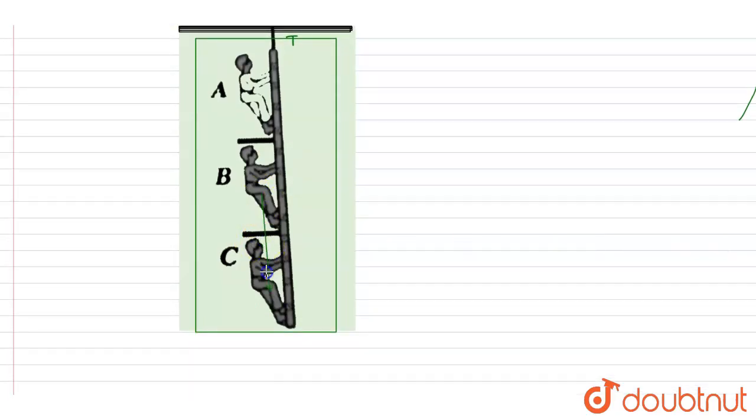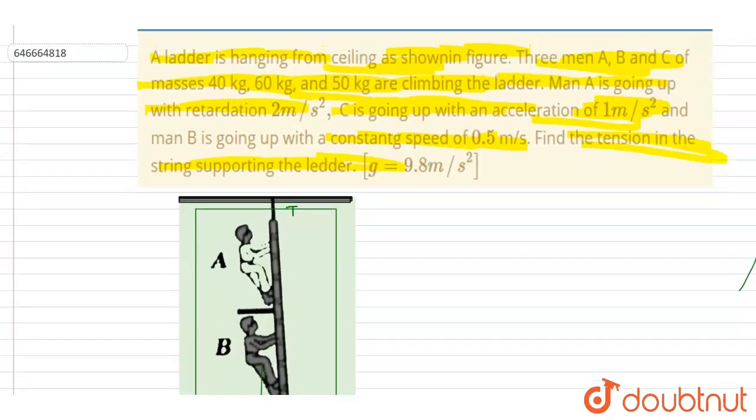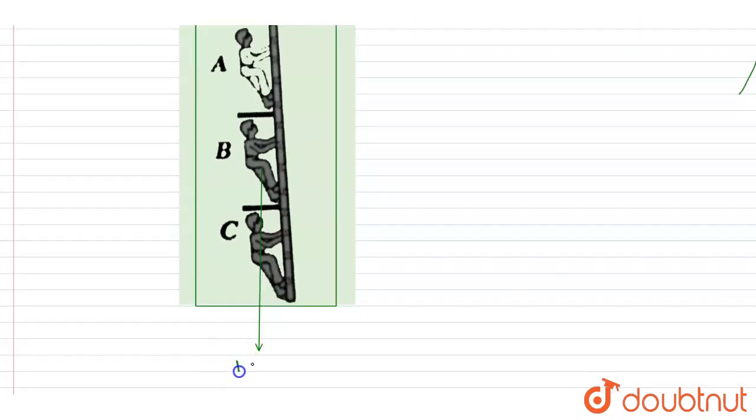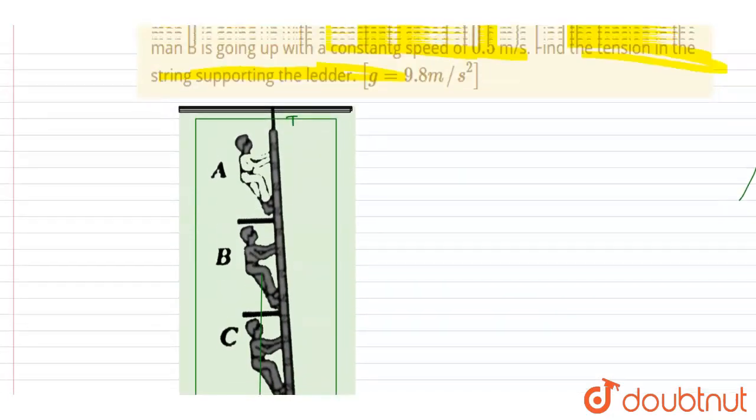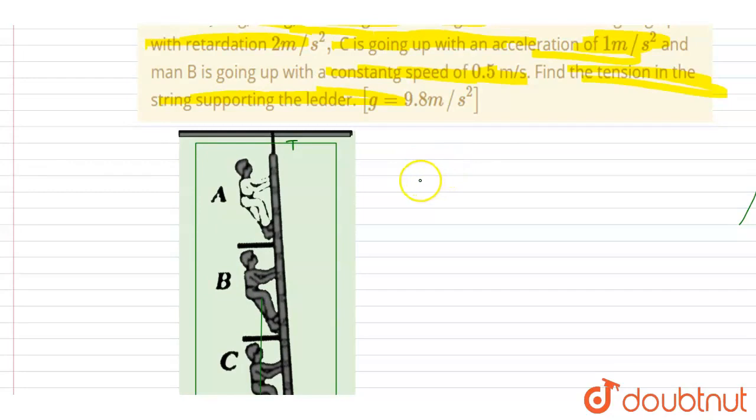And the gravitational force on each one of them will act in downward direction. The masses of them, it is 100 plus 50, it is 150 kg, right? So I will write down T minus 150g...